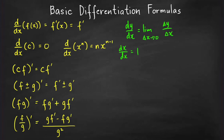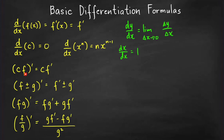We can also verify this using the power rule: the derivative of x is one times x raised to zero, and x raised to zero equals one, giving us one. Next, when we take the derivative of a constant times a function, we just copy the constant and multiply it by the derivative of the function — constant times f prime.